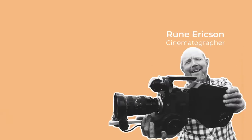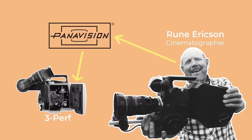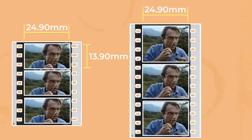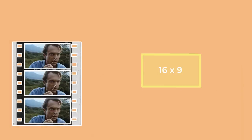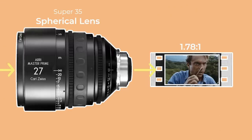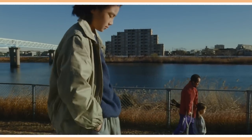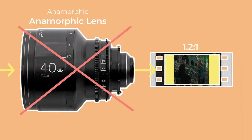In the 80s, cinematographer Rune Ericsson collaborated with Panavision to produce the first 3 perf mechanism for 35mm cinema cameras. Shooting each frame three perforations tall, as opposed to four, produced a less tall frame with a height of 13.9mm and an approximate aspect ratio of 16x9. When shot with spherical lenses, this negative could be cropped to a 1.85 aspect ratio or more cropped to get to 2.40. Because of the lack of height, 3 perf wasn't suitable for using 2x anamorphic lenses, as it would require too much of the frame width to be cropped.